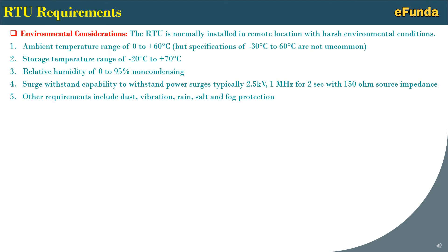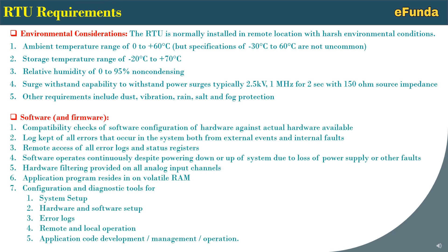Environmental considerations: the RTU is normally installed in a remote location with harsh environmental conditions. One — ambient temperature range of 0 to 60 degrees Celsius, though specifications of minus 30 to 60 degrees are not uncommon. Two — storage temperature range of minus 20 to plus 70 degrees Celsius. Three — relative humidity of 0 to 95 percent non-condensing. Four — surge withstand capability to withstand power surge, typically 2.5 kilovolt, 1 megahertz for 2 seconds with 150 ohm source impedance. Five — other requirements include dust, vibration, rain, salt and fog protection.